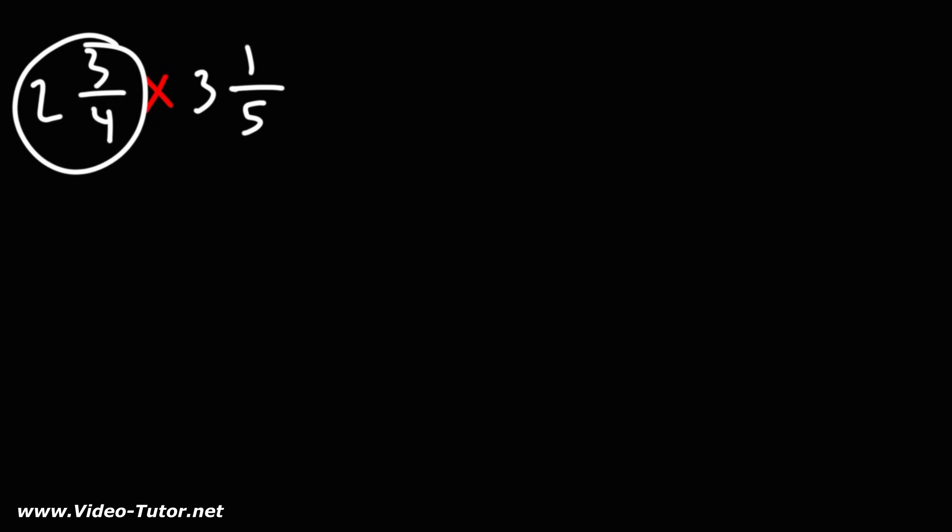So starting with the first one, we are going to write the denominator, which is 4. Next, we're going to multiply the whole number by the denominator and then add the numerator. So 2 times 4 is 8 plus 3, that's 11.